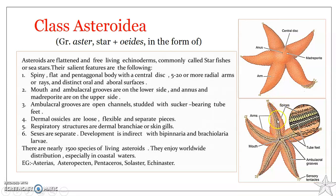The ambulacral groove is surrounded by rows of tube feet. The structural details will be covered in more detail when discussing the type species Asterias ribbens. The rows of tube feet actually border the ambulacral groove, and these tube feet are in turn protected by spines. The tube feet are used for locomotion, feeding, and respiration.